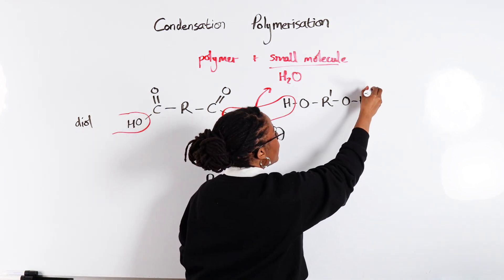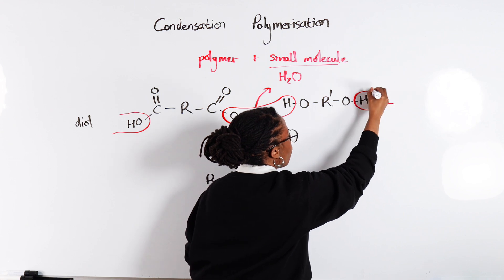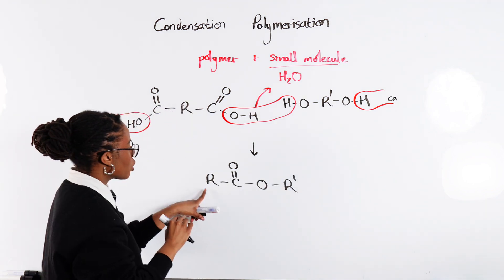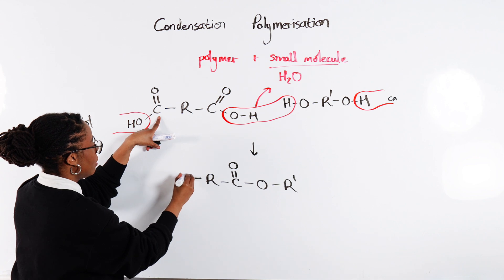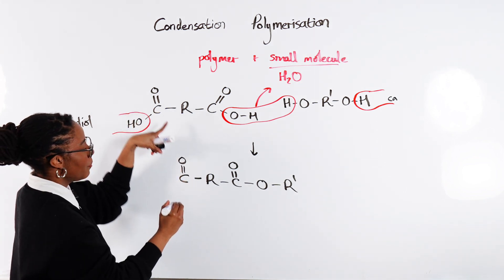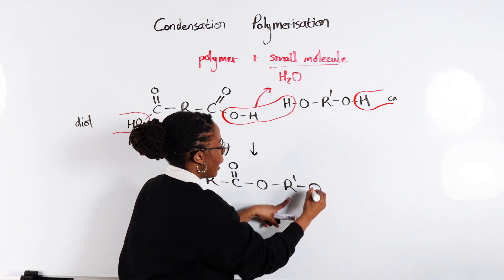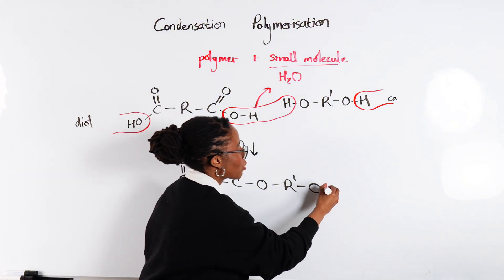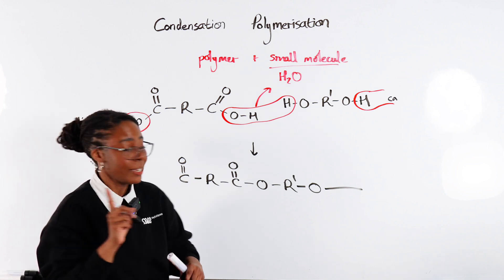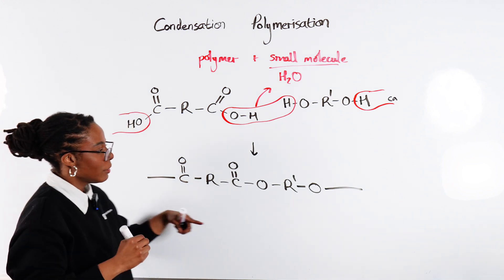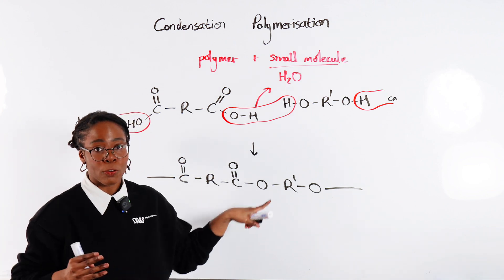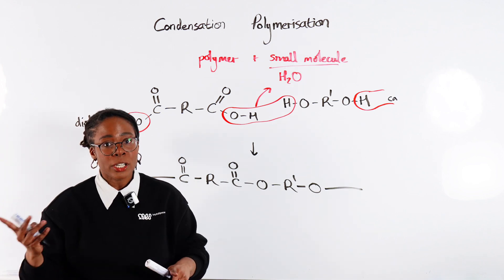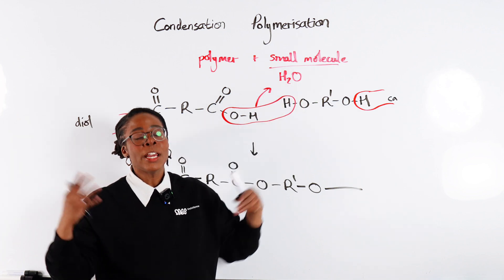The diol would still lose this hydrogen from the OH, and that would go on and bond with another dicarboxylic acid on that side. To represent our repeating unit we would still have this C with its double bond O, and on the other side of R' we would have this O here. To show that this is repeating and connected to the next one and the next one, all we do is show trailing bonds on either side — that's our repeating unit.